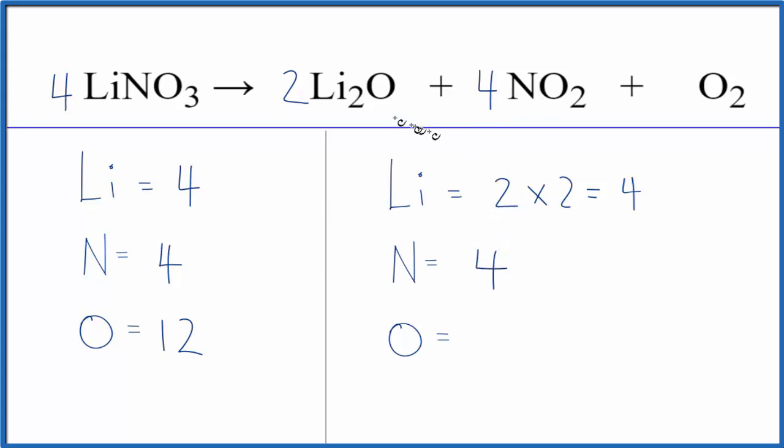Count the oxygens up again. Two and this is plus eight. That's 10 plus two. That's 12. And all of a sudden this equation, it's balanced. We're done.